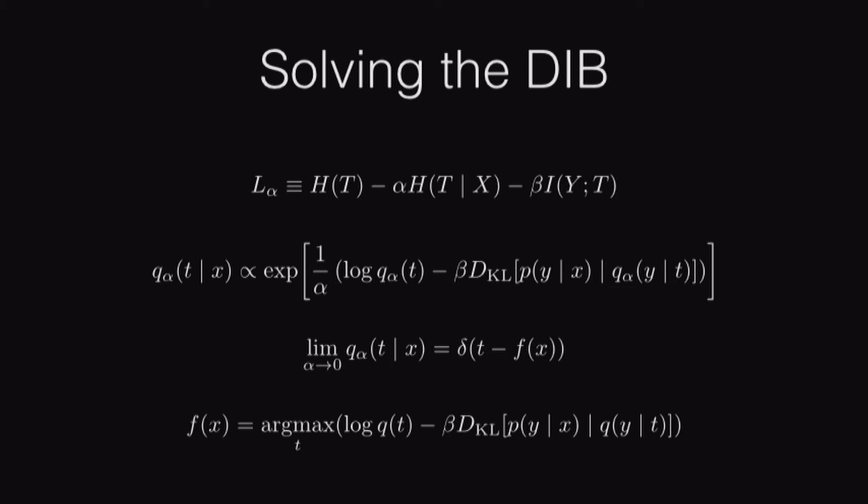What we get is a deterministic solution, hence the D in DIB again, or a hard clustering. Notice that we still have the same KL term we had in the IB solution to encourage relevance. We have this log marginal term, which basically just encourages mapping data points to clusters that are already large, so a rich get richer kind of scheme. Note that this is an iterative solution, just like IB, so I'm only showing the encoder equation here, but we have those two others we need to iterate with. We start with some initialization, iterate to convergence.